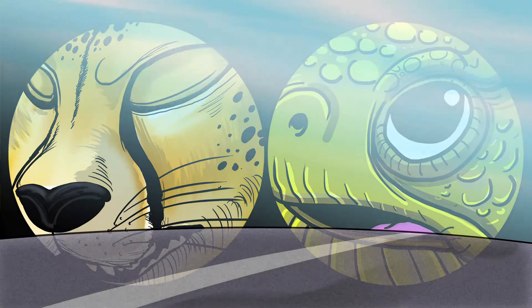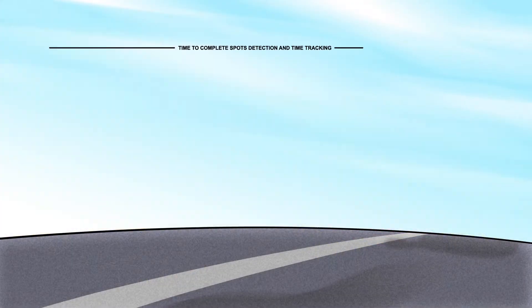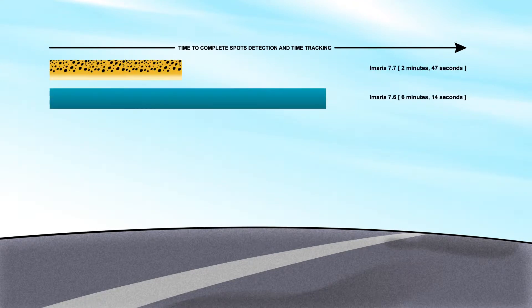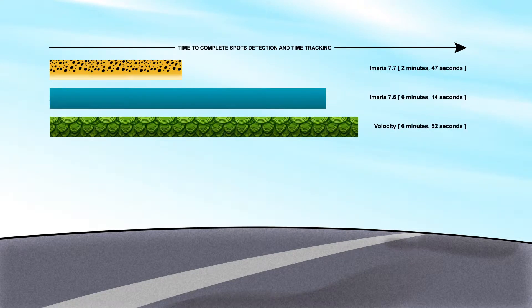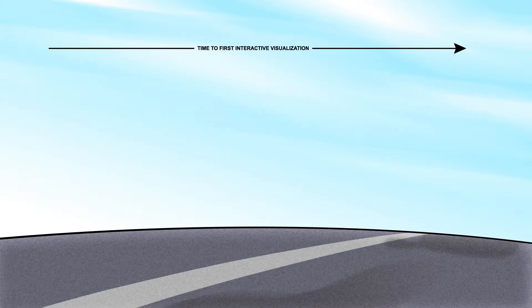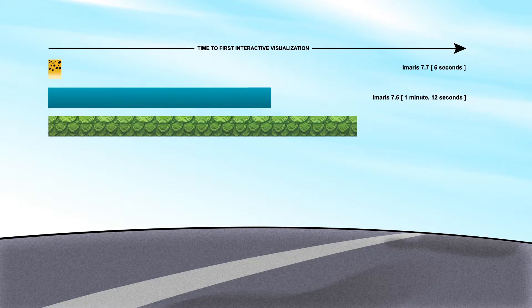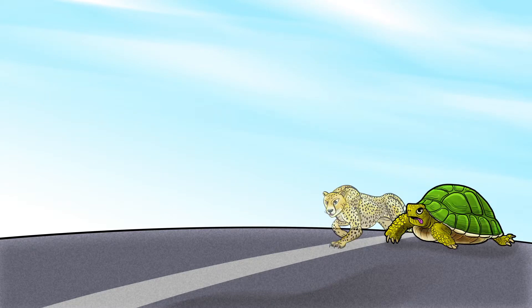But not all software packages are created equal. Imaris is like no other visualization and analysis software. With powerful performance improvements and real-time visualization of large time-lapse data sets, Imaris 7.7 is the fastest in class for image visualization, analysis, and exploration.